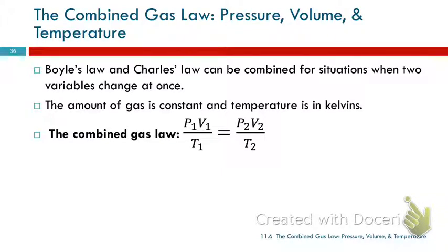We don't always have situations where we only have two variables changing. Sometimes we have three: pressure, volume, and temperature. What if they're all allowed to vary? Here, we're keeping the amount of gas constant, and the temperature has to be in kelvins. We can combine Boyle's Law and Charles' Law, and we get what's known as the combined gas law, right there.